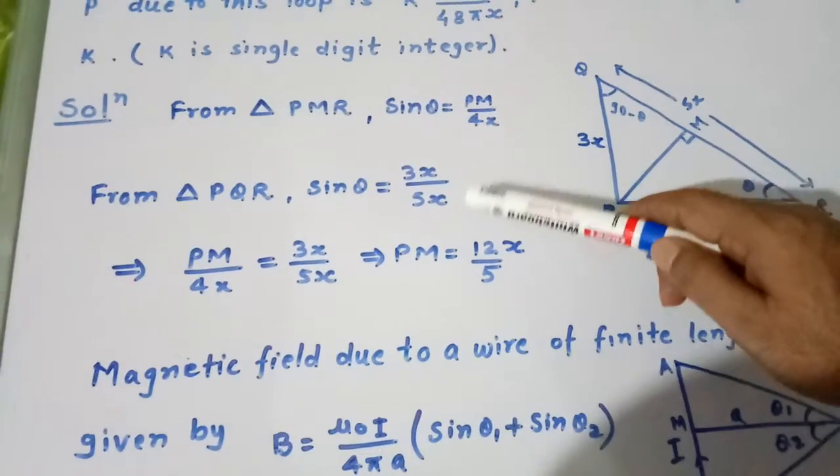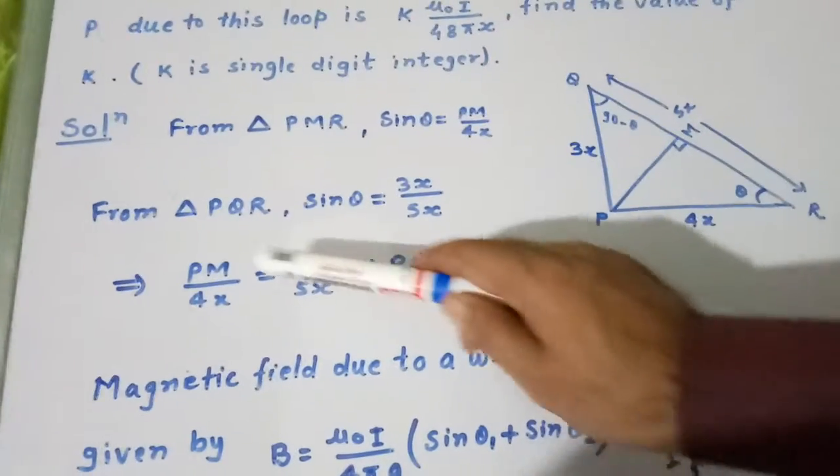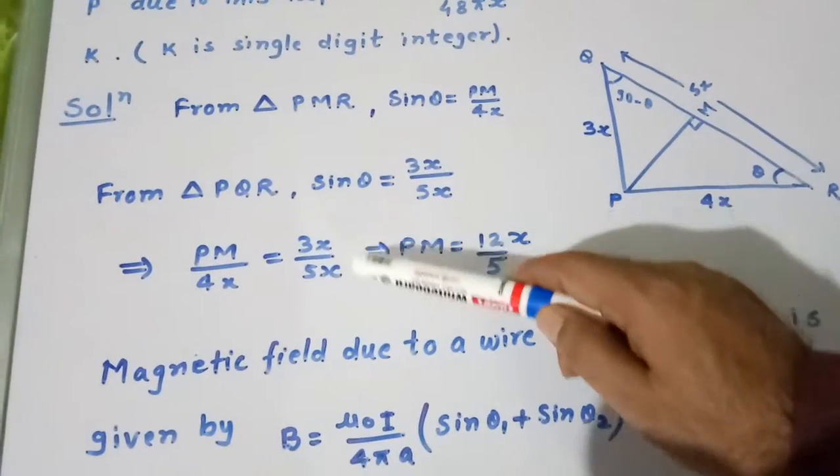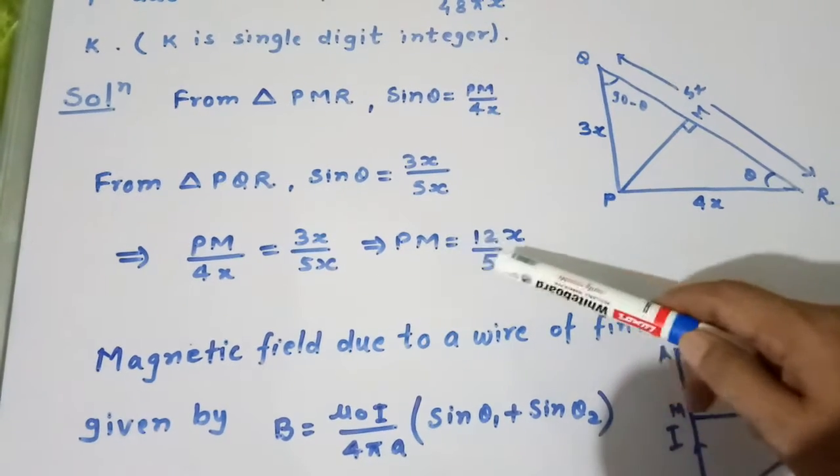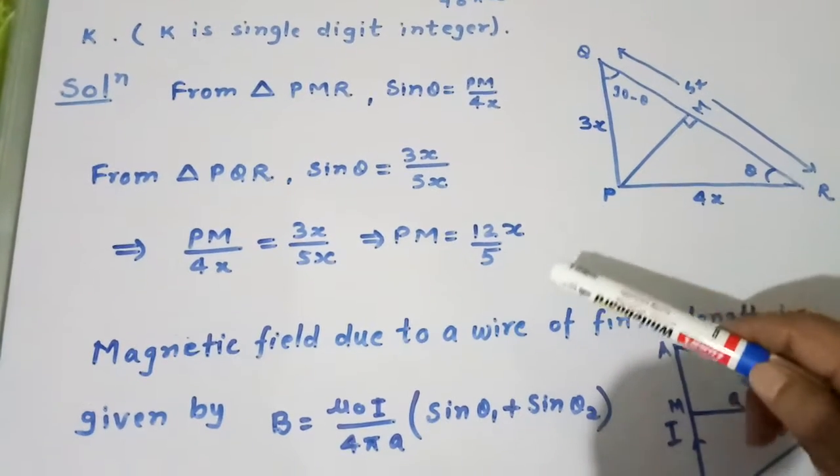Now we equate the two sin θ: PM upon 4X equal to 3X upon 5X, which gives PM equal to 12X divided by 5.